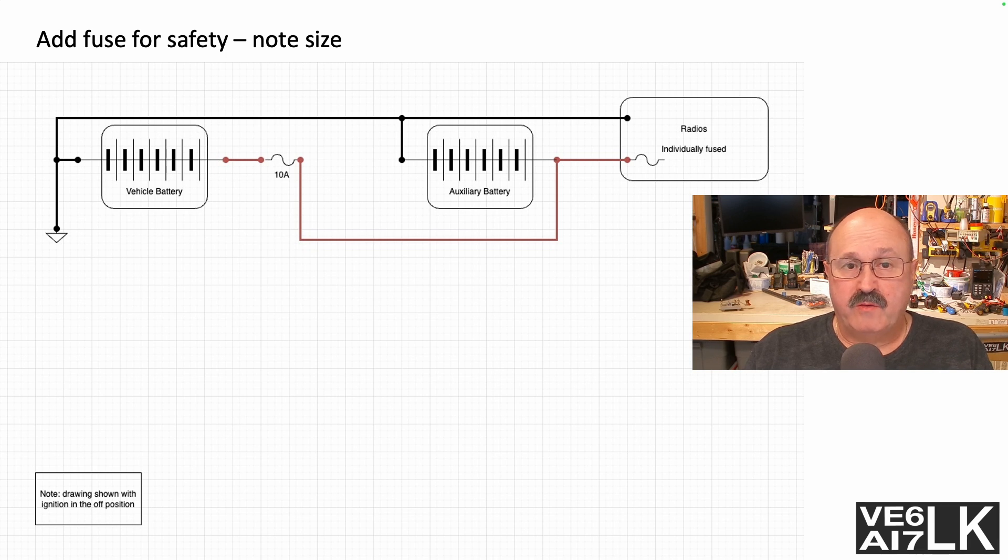You're going to note it originally was a 25-amp fuse because I was powering the radios directly—a 100-watt radio, 100-watt HF radio needs 22 amps. So now it's 10 amps because all I have to do is provide just a little bit of charging current.